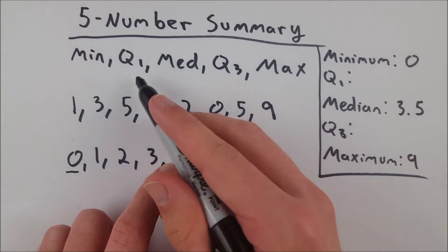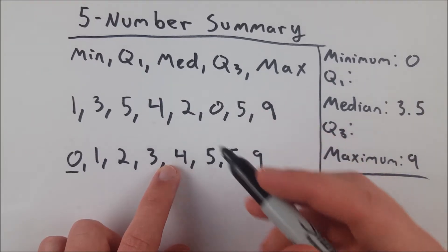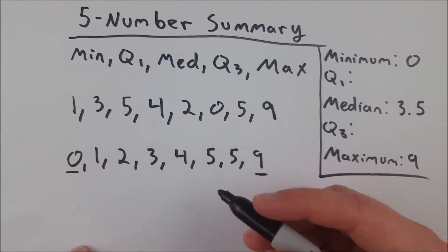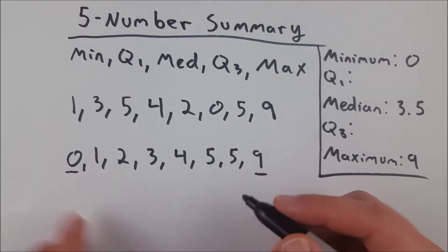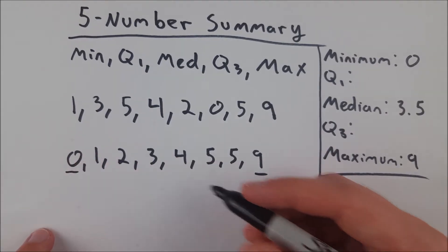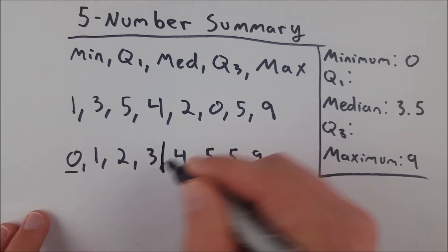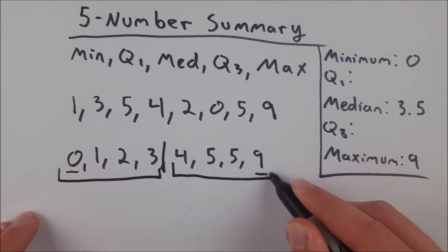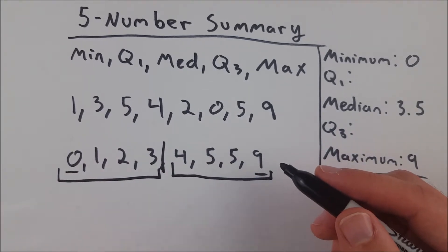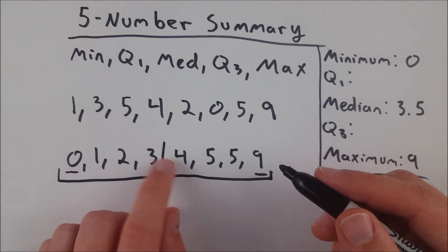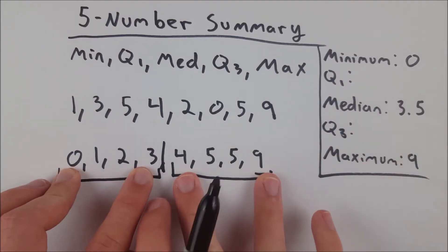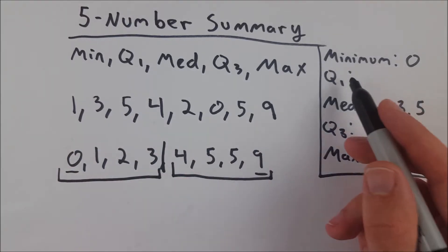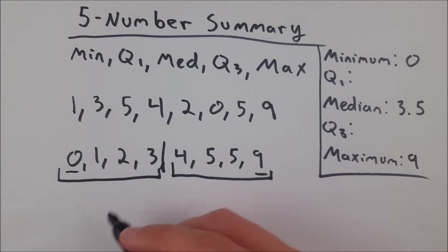So our first and third quartile, you have to split the data into two different pieces. And you split the data right at the median. Since we have an even number of data points, we can split it right here. So we section it off into these two pieces of data. If we had an odd number of data points, there would be some number here. And that number would not be included in either of these two pieces of the data, it would basically be discarded for finding the first and third quartile.